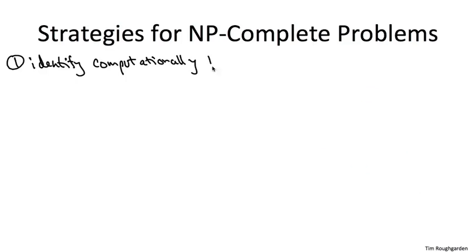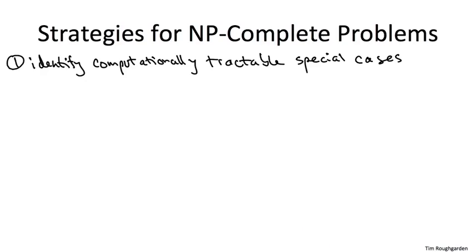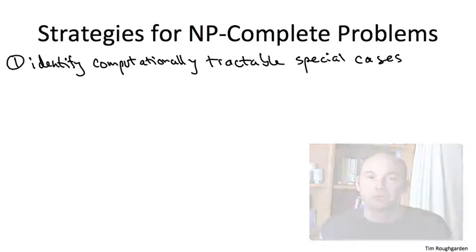Let's briefly review the three strategies for dealing with NP-complete problems. All of these are relevant for the knapsack problem. The first strategy is to identify computationally tractable special cases of the NP-complete problem that you're grappling with. If you're lucky, the instances relevant for your application will fall squarely into one of these computationally tractable special cases. Even otherwise, it's useful to have these kinds of subroutines lying around.